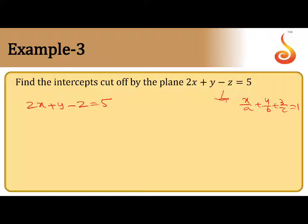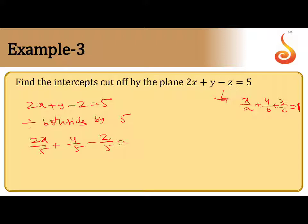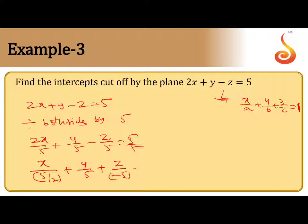How to bring this equation into that form? The right side must be 1. So divide both sides by 5: 2x/5 + y/5 - z/5 = 5/5. This can be rewritten as x/(5/2) + y/5 + z/(-5) = 1.